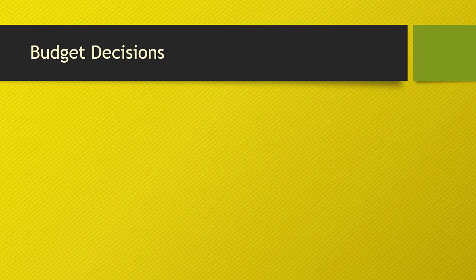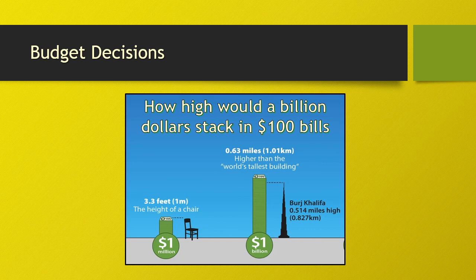An advertising budget is an estimate of a company's promotional expenditures over a certain period of time — the money they're willing to set aside to accomplish their marketing objectives. When creating an advertising budget, a company must weigh the value of spending an advertising dollar against the value of that dollar as recognized revenue. This can be a great deal of money. Disney spent about $3.15 billion in 2019, but that was mere pennies compared to the number one spender, Amazon, at $6.88 billion, and number two, Comcast, at $6.14 billion — that's the equivalent of six of the tallest buildings in the world stacked in dollar bills.